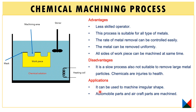The applications of chemical machining include machining automobile parts and aircraft parts. It can also be used to machine irregular shapes and is very suitable for complicated machining areas. These are the main applications of this process.